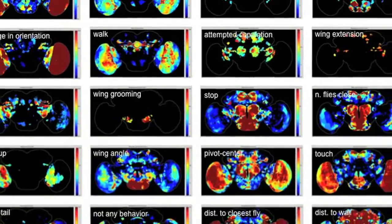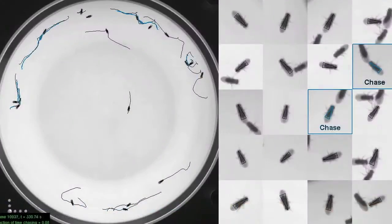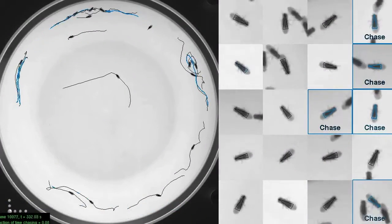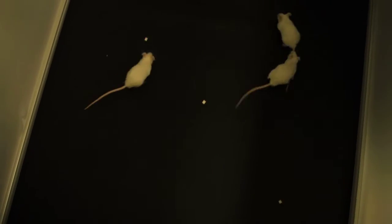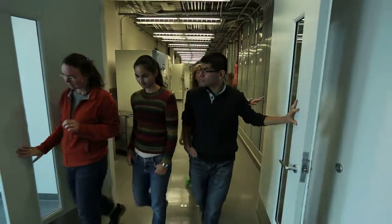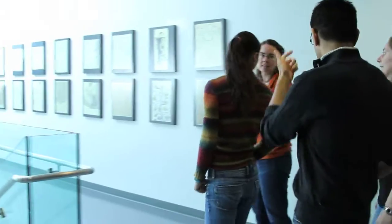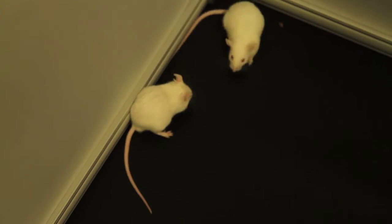The tracking systems we've developed, the behavior classification systems we've developed, have all been used by other labs at Janelia for very different problems. We developed them for flies, but they work on larvae. They work on mice. They work across a wide variety of animals. We collaborate with a lot of different labs. And we try to find the common problems within all of their data.